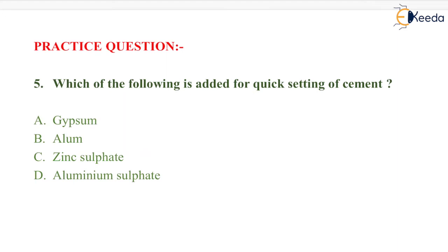For quick setting of cement, the quantity of gypsum is reduced and a small percentage of aluminium sulphate is added. So the correct option is option D, that is aluminium sulphate.